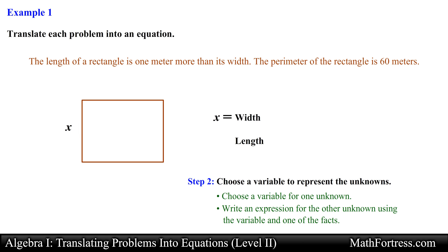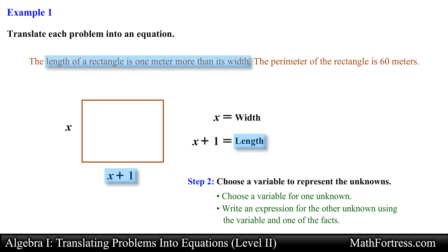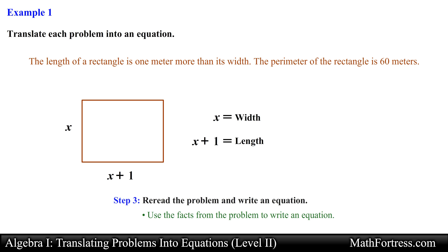Now that the width is represented by the variable x, the length of this rectangle would be denoted as the quantity x plus 1, since the length is 1 meter more than the width. Having assigned variables to both unknown quantities we are ready to translate the word problem into an equation. We are given that the perimeter of this rectangle is equal to 60 meters, and we will use this fact in combination with the variable expressions to form an equation.